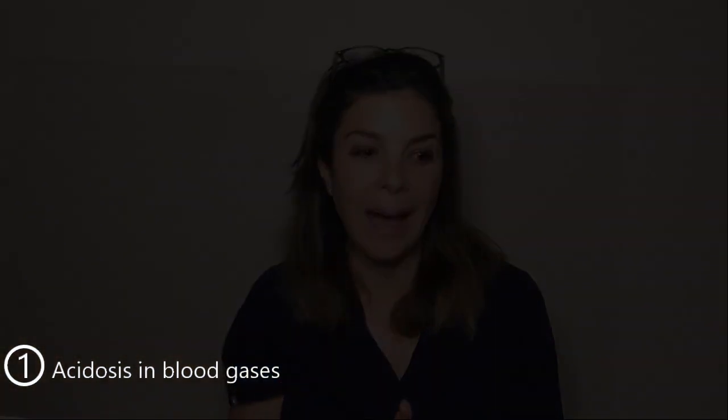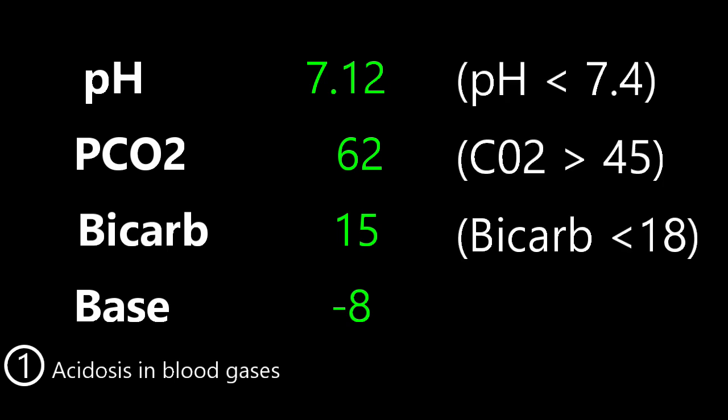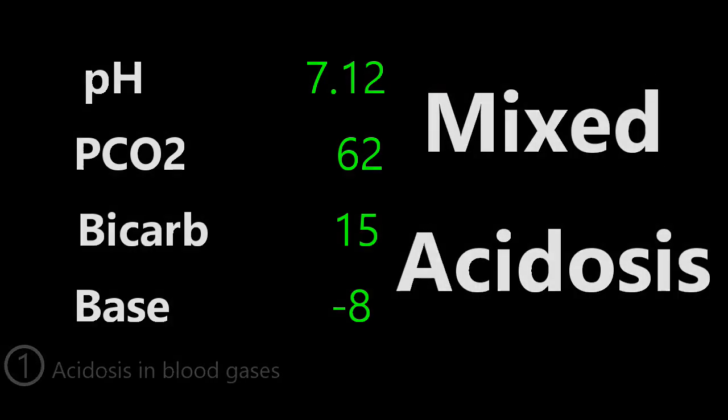In metabolic acidosis, you'll have a low bicarbonate — less than 18 — and a base deficit of minus three or more. For example, if you have a gas like 7.12, 62, 15, minus eight: the pH is less than 7.4, so we have acidosis. The CO2 is 62, which is higher than 45, so you also have a respiratory acidosis. The bicarb is 15, which is less than 18, and the base is minus eight, which is less than minus three — both consistent with a metabolic acidosis. So in this gas, you have a respiratory acidosis as well as a metabolic acidosis. This is what we call a mixed acidosis.